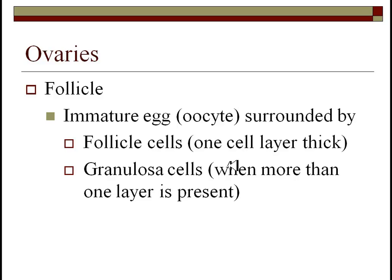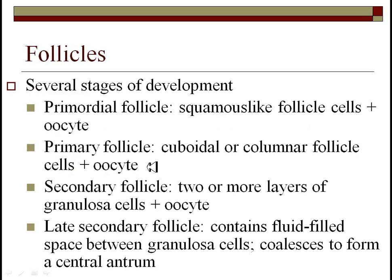To begin with, in the ovaries this is where the eggs are going to be produced. We'll call them a follicle. They begin immature and will have follicle cells surrounding the actual egg or oocyte. Once you've gotten multiple layers of these follicle cells they're called granulosa cells. Follicles go through several stages. We begin with the primordial follicle, which has squamous-like or flat cells surrounding the oocyte.